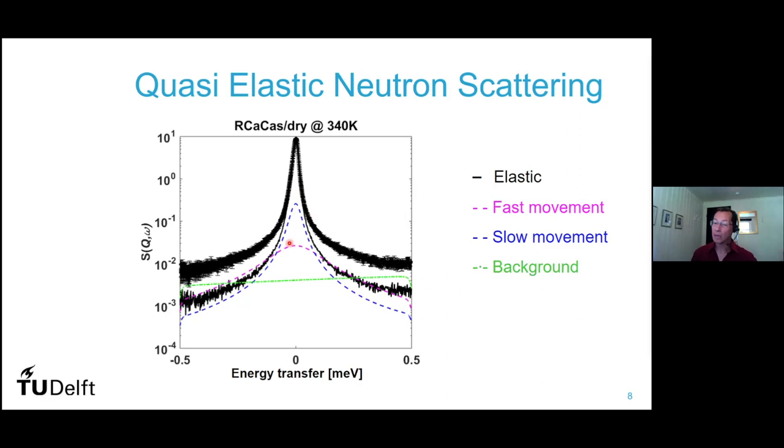And then in addition, there's a background. And now you have to think what's the meaning of these fast and slow movements. And this is to fit the red curve with this model.